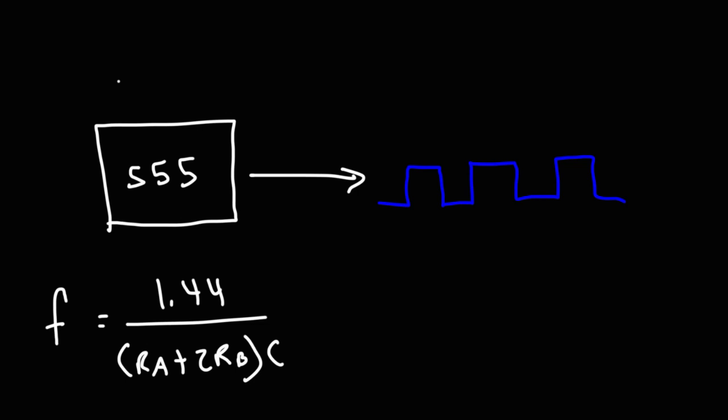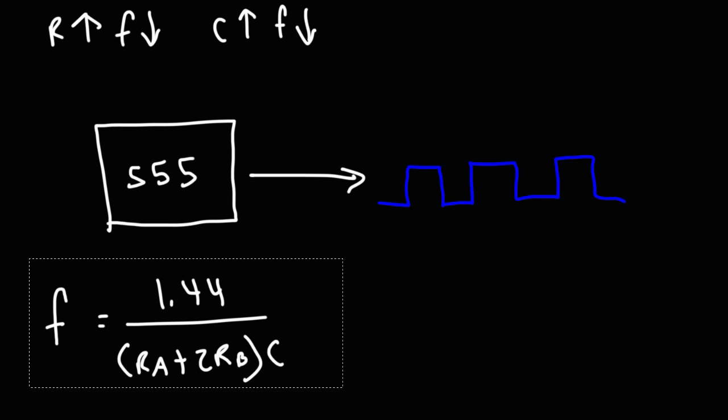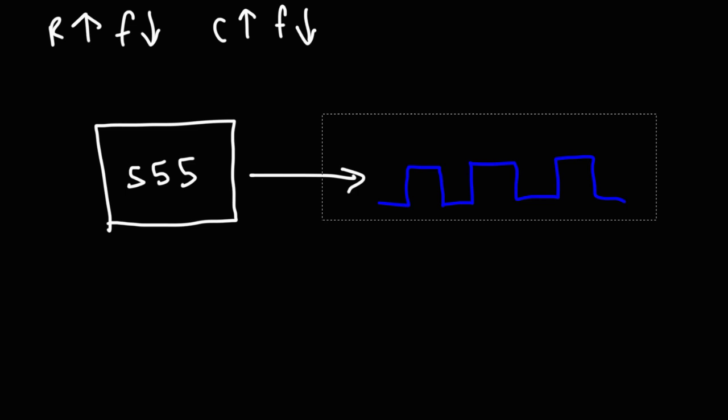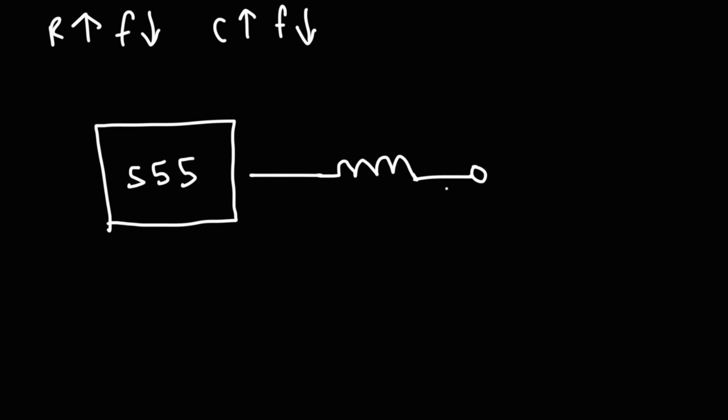In either case, the resistors and capacitors are in the denominator of the formula. As resistance goes up, the frequency goes down, and as you increase the capacitance of the circuit, the frequency also goes down. You can convert the square wave into a sine wave by introducing an LC network at the output — if you add an inductor and a capacitor to the 555 timer output.